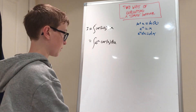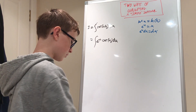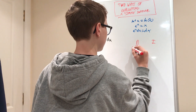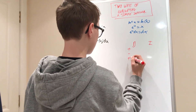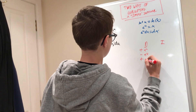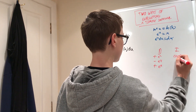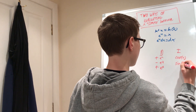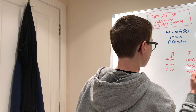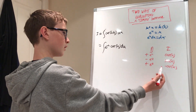Now we have to do integration by parts and we use the DI method. So DI: plus, minus, plus — we differentiate e to the u and we integrate cosine u. The integral of cosine is positive sine, and the integral of sine is negative cosine.